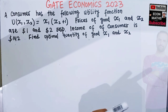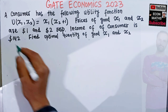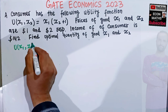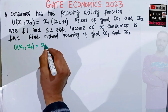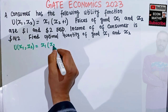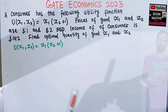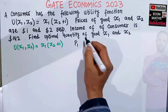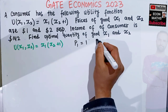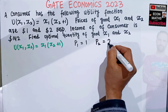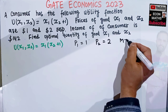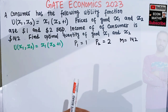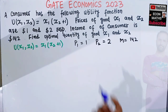To recap what we are given: the utility function is U(x1, x2) = x1(x2 + 1). Price of good one is $1, price of good two is $2, and income of the consumer is $142. We need to find the optimal bundle that the consumer will be consuming.